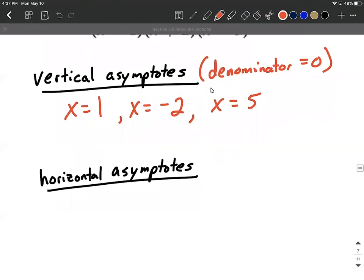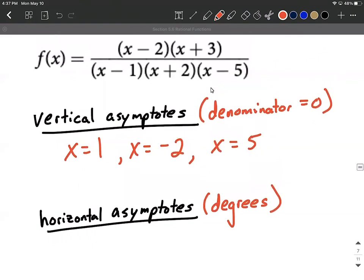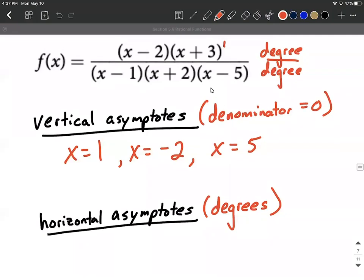Next up, horizontal asymptotes. These occur based on the degree of the numerator and the degree of the denominator. We want to compare the degree of the numerator and the degree of the denominator. So the degree of the numerator, in this case, is going to be two.